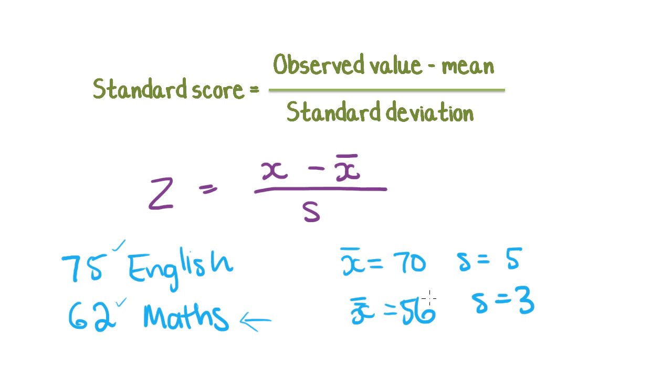So let's say for English the mean is 70 and the standard deviation is 5. And let's say for maths you have a mean of 56 and a standard deviation of 3. Now we can use this formula of z-scores to figure out which subject you actually did better in.